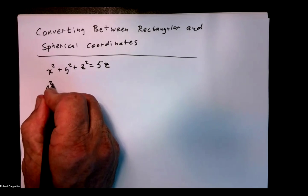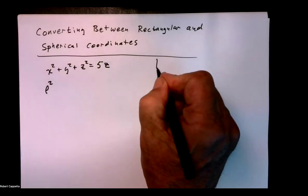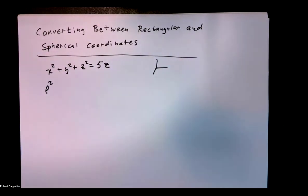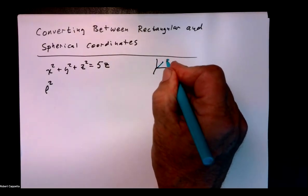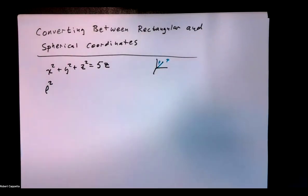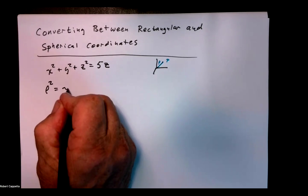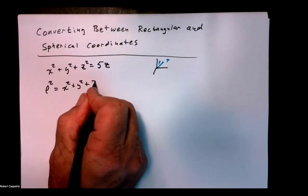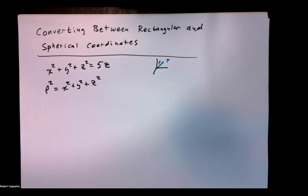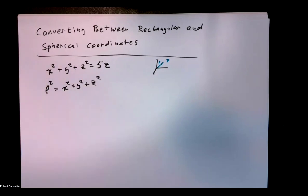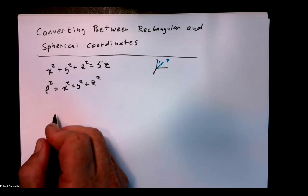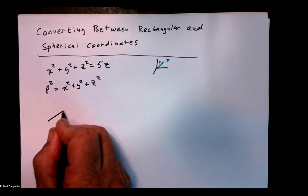We need to remember that rho is the distance from the origin to the point P. So if I have my point P, the length of that is rho. We know that rho squared is simply x squared plus y squared plus z squared. So this first piece, x squared plus y squared plus z squared, is going to be rho squared. Then we have two triangles that we have to work with.